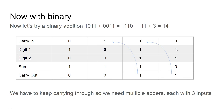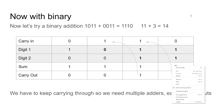1 and 1 — as we looked at in our half adder — that makes a 0 and carry the 1. But then in the next column we've got three digits to contend with: 1, 1, 1. Well, that makes a sum of 1 and carry 1 — because in binary 1+1+1 is 3. Then 1 and 0 and 0 just makes 1 with nothing to carry. And there we go: 1110, which makes 14.